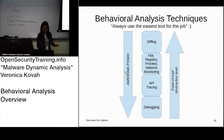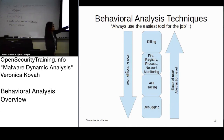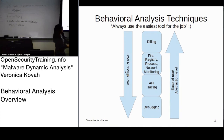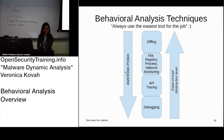To summarize, I've explained these from the easiest technique to the most difficult. Diffing is easy, system monitoring requires much more work, API tracing also requires more knowledge, and debugging is basically the hardest to do. In this class we will go up through API tracing.